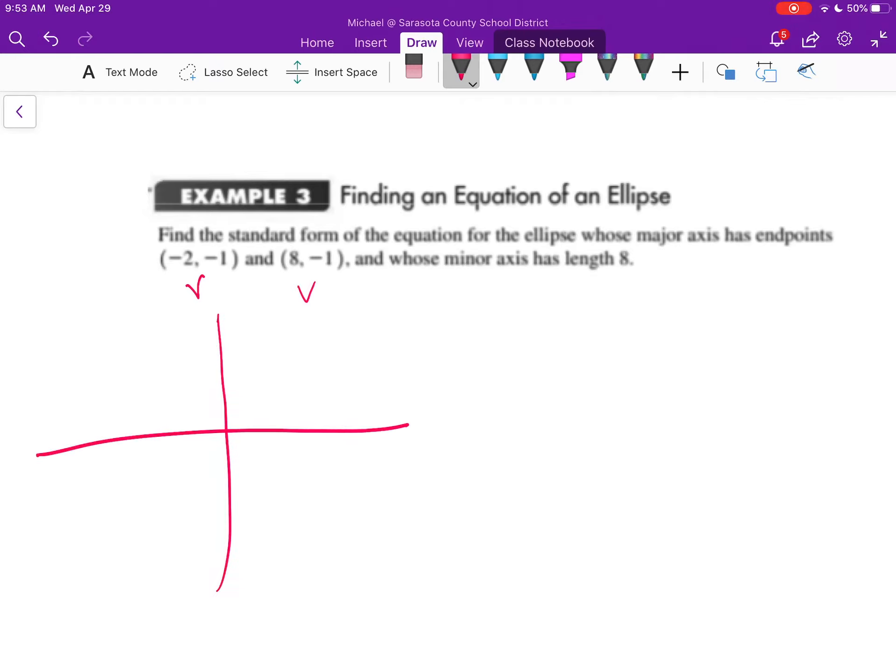So if I'm making a quick sketch of this, I'm going to be down here at negative 1, here at 8, and here at negative 2. So there's going to be a vertex point, and there's going to be a vertex point there.